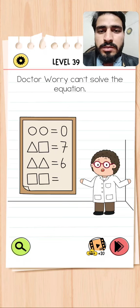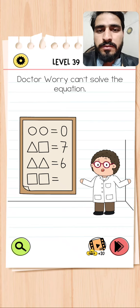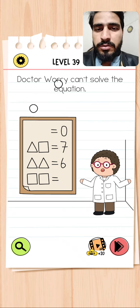Hey guys, Brain Test level 39. Dr. Worry can't solve the equation, so we have to solve this equation. The two circles are equal